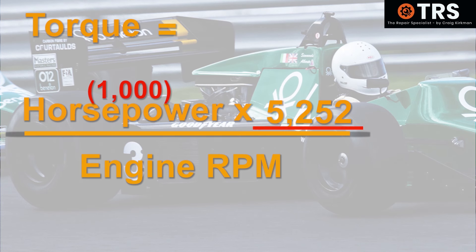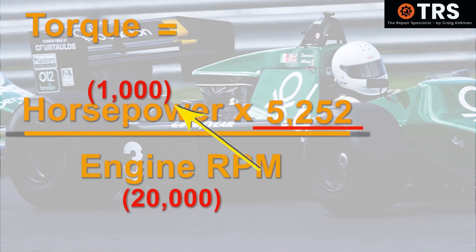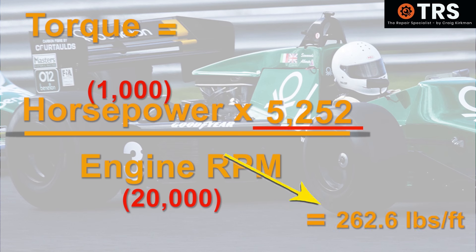We'll multiply that by 5252 and divide it by their maximum RPM. Some of them are capable of revving at 20,000 RPM, so we'll put in that figure. This horsepower at this particular RPM brings out a torque value of 262.6 pound-feet. Any variation in either the horsepower or the RPM would of course affect the value of torque.